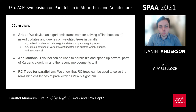For example, we could solve mixed batches of path weight updates and path weight queries, or mixed batches of vertex weight updates and subtree weight queries, or some combination of the two, or many others. We then show that this tool can be applied to parallelize and speed up several parts of Karger's algorithm and those recent variants of it. Lastly, we show that we can use rate compressed trees to parallelize some of the remaining challenging pieces of Garachowski et al.'s recent sequential algorithm.